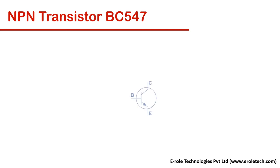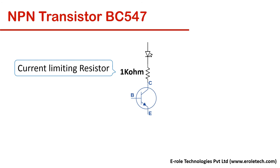Let's see how a transistor is used as a switch. We will take an NPN transistor, BC547. We will connect an LED and a 1kΩ resistor at its collector. The resistor is used to protect the LED from uncontrolled current. We will give 5V to the LED's anode terminal, and the cathode of the LED is connected to the collector of the transistor.